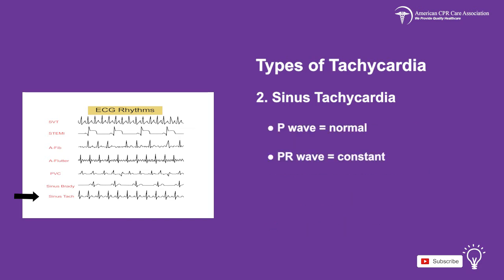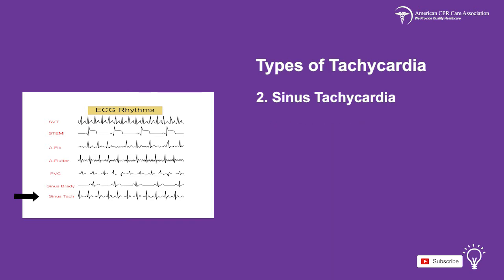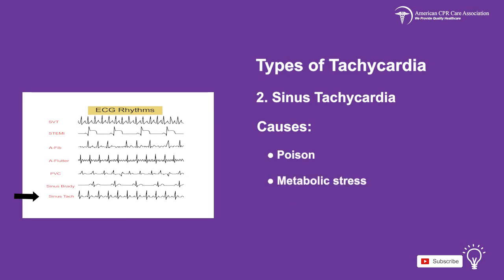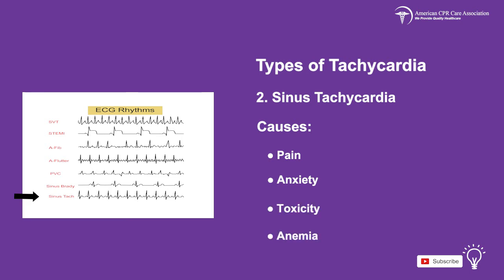The P wave is normal, the PR interval is constant, and the RR interval is variable. Some causes of sinus tachycardia are hypoxia, hypovolemia, fever, poison, metabolic stress, trauma, pain, anxiety, toxicity, and anemia.